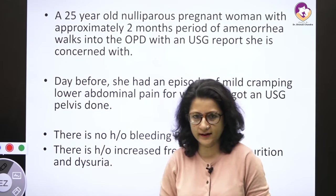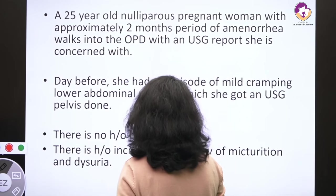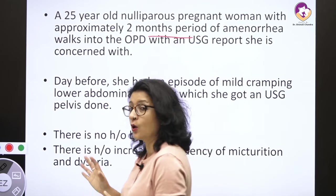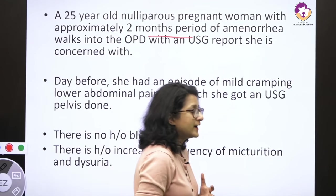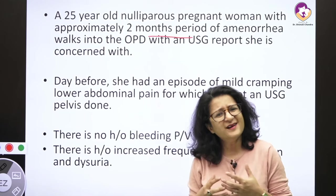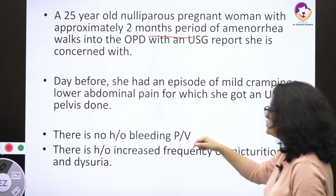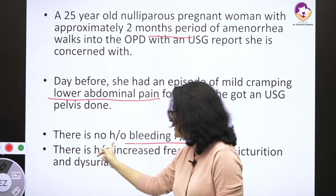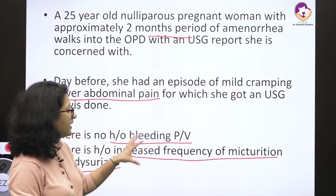Moving on to another clinical presentation: a 25-year-old Nali Paris pregnant woman with approximately 2 months of amenorrhea walks into the OPD with an ultrasound report she is concerned about — she has not come with symptoms but with a report. The day before, she had an episode of mild cramping and lower abdominal pain, for which she got a pelvic ultrasound. She also had increased frequency of micturition and dysuria.